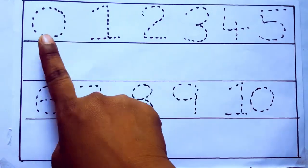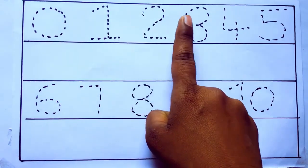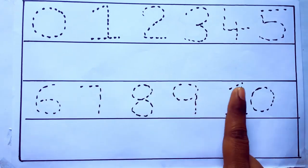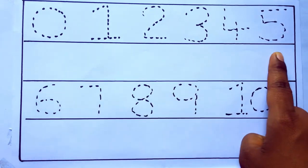0 to 10: 0, 1, 2, 3, 4, 5, 6, 7, 8, 9, 10, and rewriting the numbers.